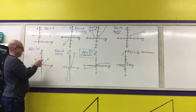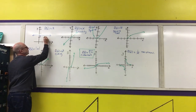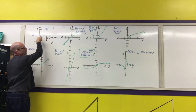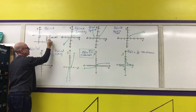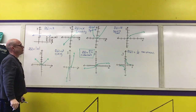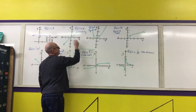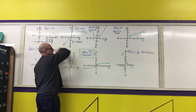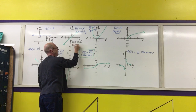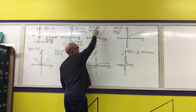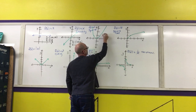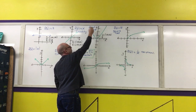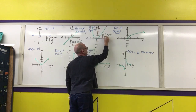The constant function has a domain of all real numbers, negative infinity to infinity. Its range is just the single y-value of the constant, written in set braces. The identity function is a polynomial, so its domain and range are both all real numbers. The squaring function is also a polynomial, so its domain is all real numbers, and its range is [0, ∞).